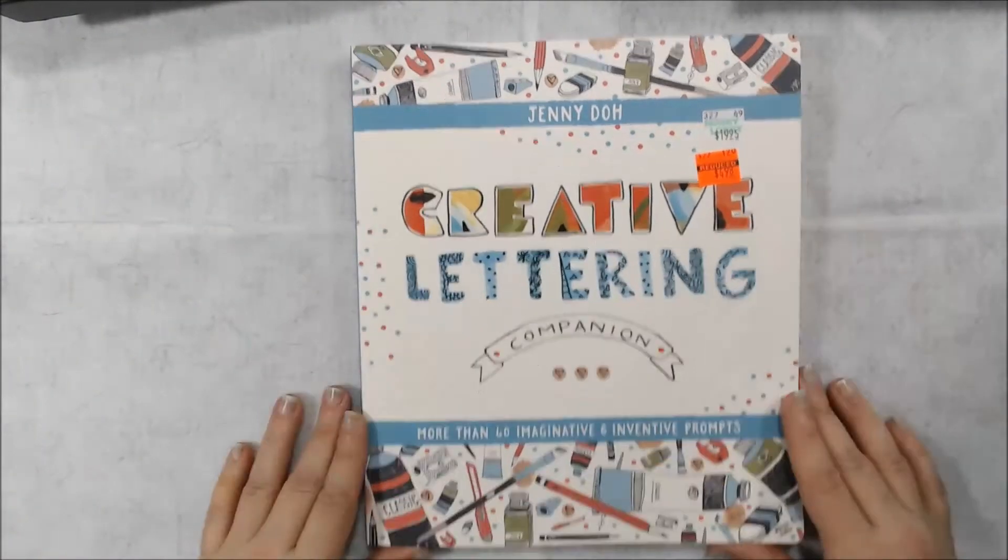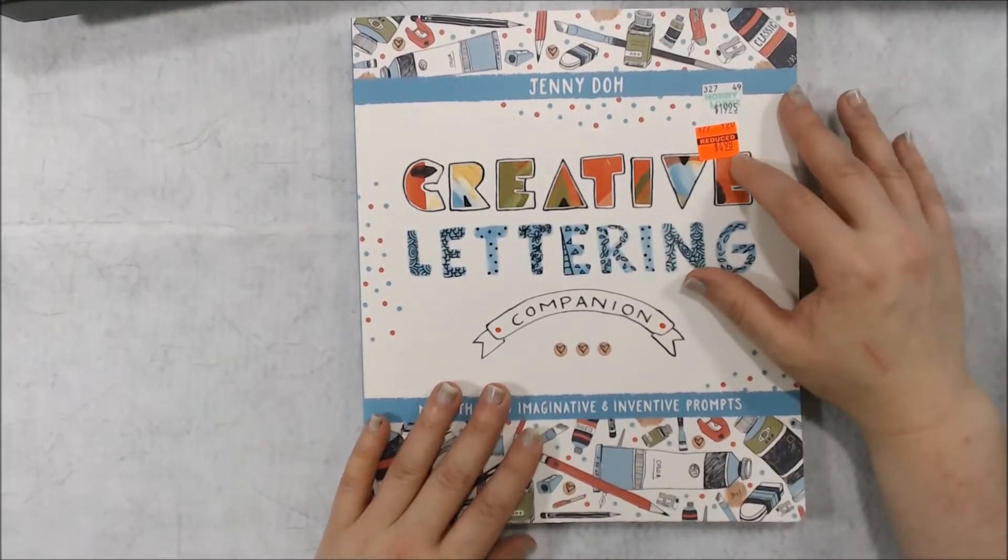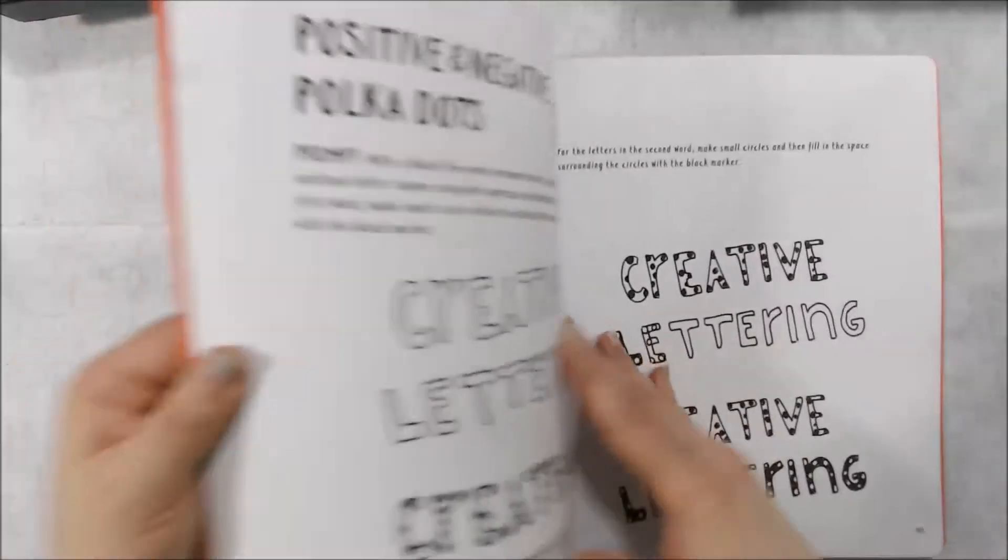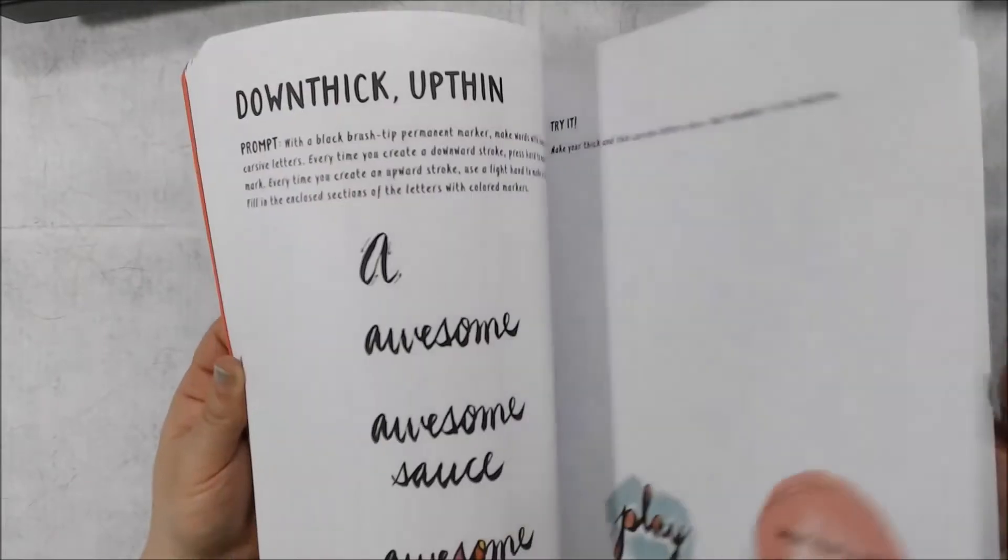And then I got a book of creative lettering. It's normally $19.95. It was on clearance for $4.98. And it's a really nice book. You have like little circles. It was different.